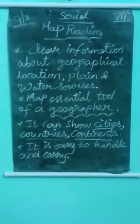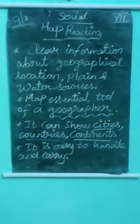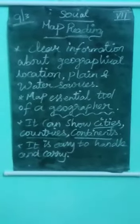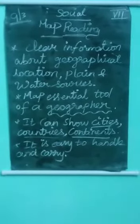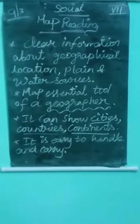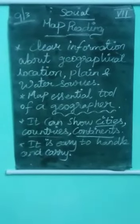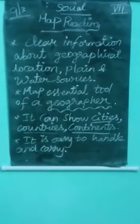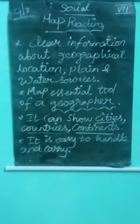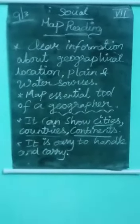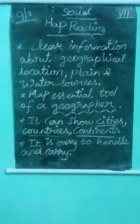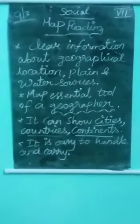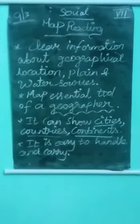The map looks like a flat surface, and we can see the whole map or part of the Earth in it. It can show different continents, countries, cities, and even local areas. It gives specific detail about countries and continents, and it is easy to handle and carry — we can roll it up or fold it up.